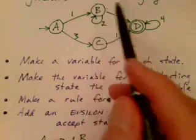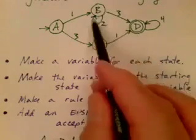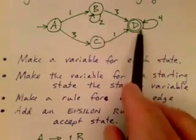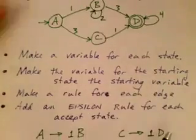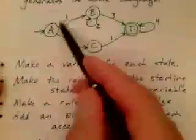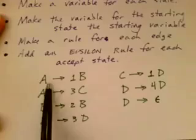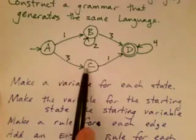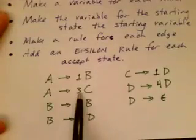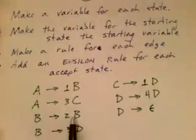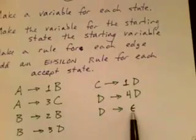For this edge there will be a rule added to the grammar, and so on for each edge. Then add an epsilon rule for every accept state. For A going to B on 1, we add the rule A goes to 1B. For the edge A goes to C on 3, we have a rule A goes to 3C. B goes to itself on 2, so we see that rule as well. And finally, the accepting state D goes to epsilon.